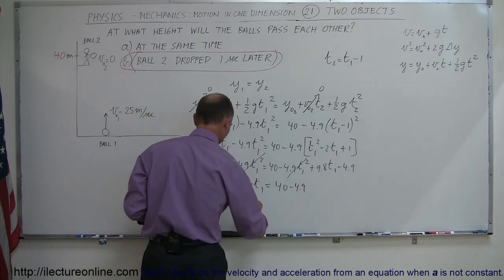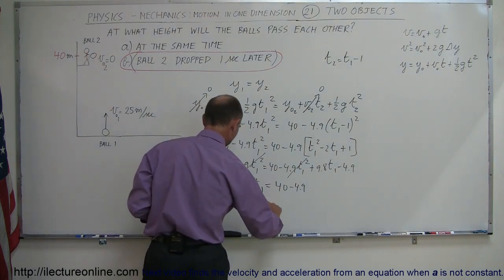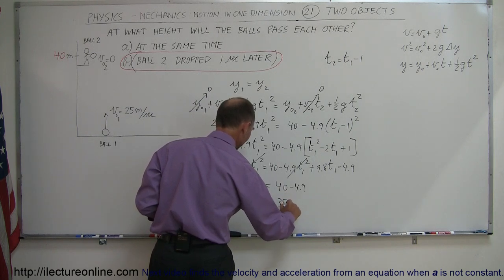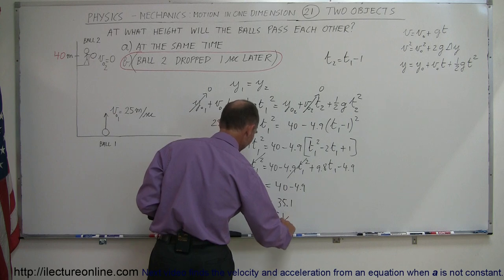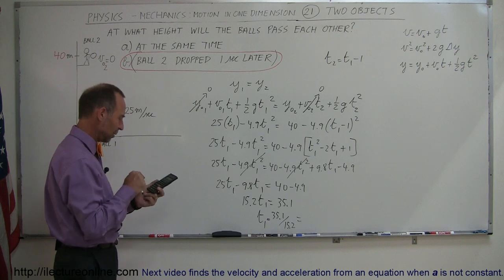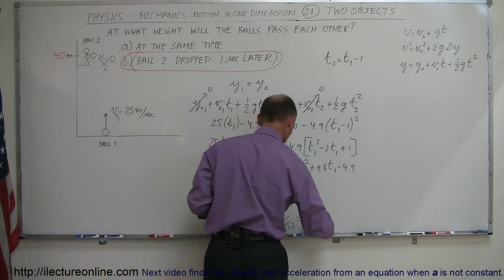Simplifying that, we have 15.2 t1 equals 40 minus 4.9 or 35.1. So t1 equals 35.1 divided by 15.2, and it's 2.31 seconds.